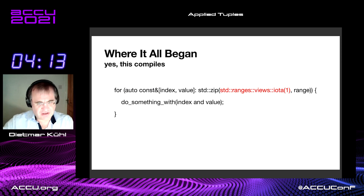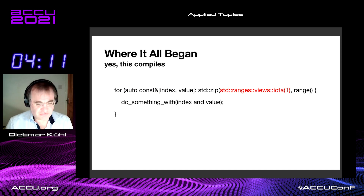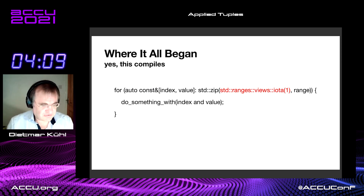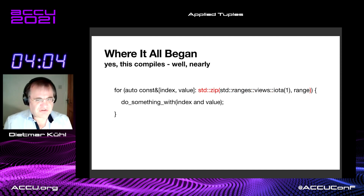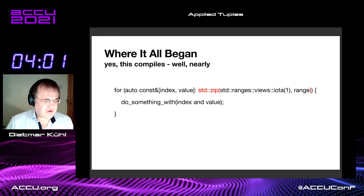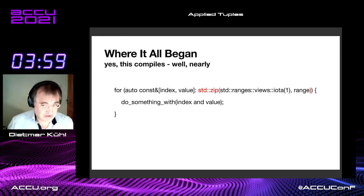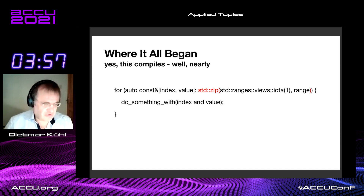Range views iota gives you a sequence of values — also great, C++20, loving it. But it nearly compiles. STD zip is not a thing. Even if I had written std::ranges::views::zip, in which case the line would not fit on the line, it still wouldn't compile.